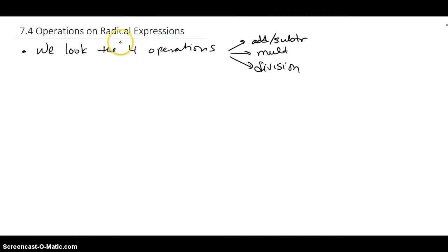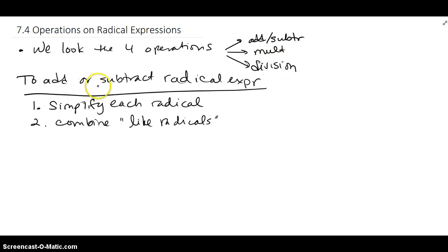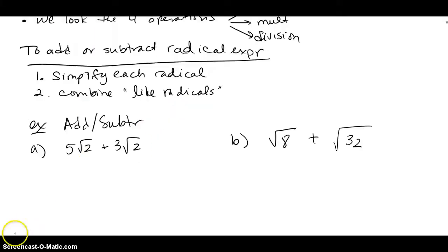We're going to look at the four operations of radical expressions in this section: addition and subtraction, which are done pretty much the same way, multiplication, and then division. To add or subtract radical expressions, first we make sure everything is simplified — every single radical is completely simplified — then we combine like radicals.